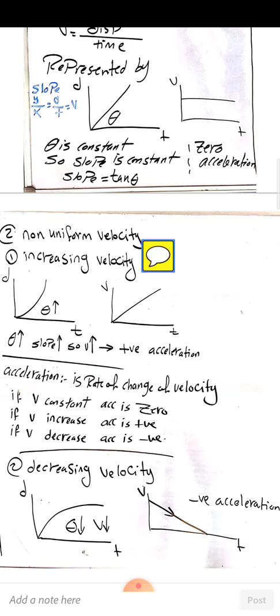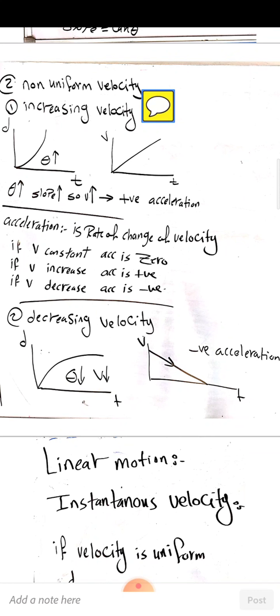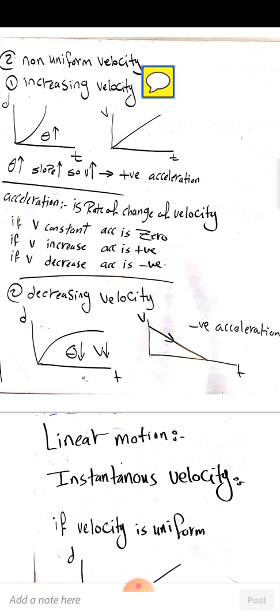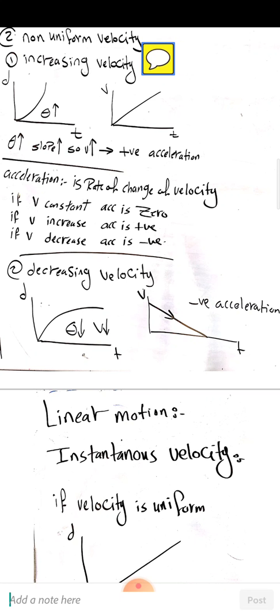Decreasing velocity is represented by displacement-time and velocity-time graphs. In the displacement-time graph, θ decreases until it reaches zero — the angle between the curve and the x-axis decreases to zero at the end point of the curve, where the tangent has a zero angle with the x-axis. In the velocity-time graph, it shows negative acceleration because the slope calculated between the line and the x-axis has a negative value.